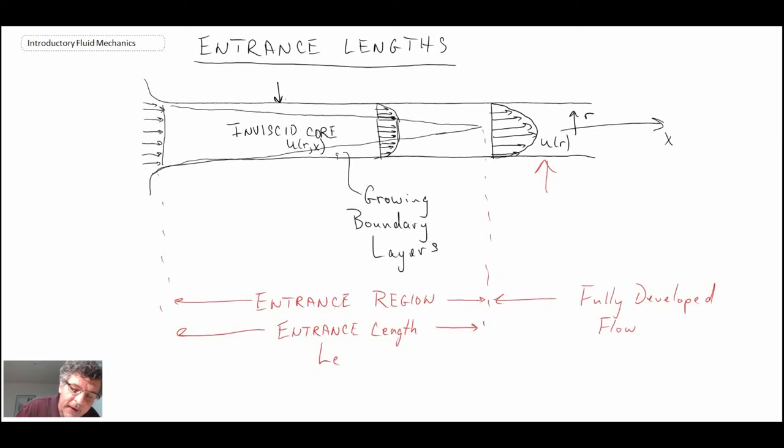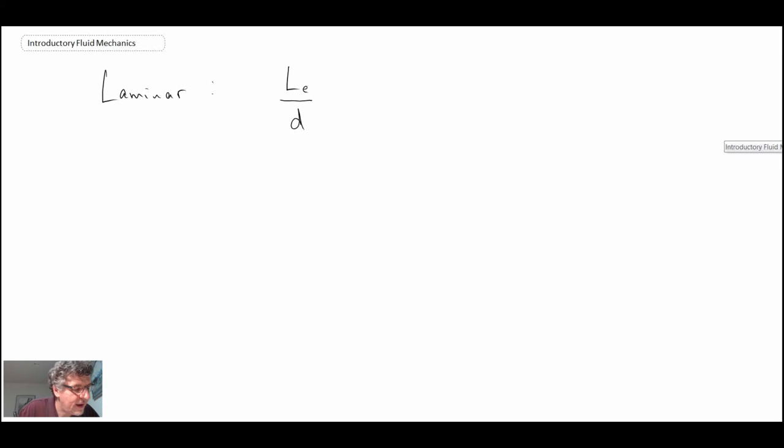So if you have laminar flow in an entrance region, we normally quantify based on the number of pipe diameters. Looking back at our schematic, I didn't draw the diameter on here but that would be the diameter of the pipe. And so we determine entrance length based on the number of pipe diameters, and for laminar flow you get a relationship that is approximately this where this is Reynolds number based on diameter.